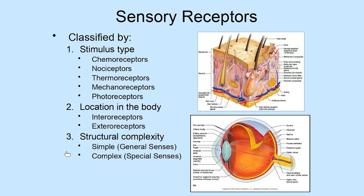The second receptor type when classified by stimulus type is the nociceptor. Nociceptors are located throughout most tissues of the body, with a few exceptions. They are pain receptors — activated when damage is actually done to tissues, causing us to feel pain.